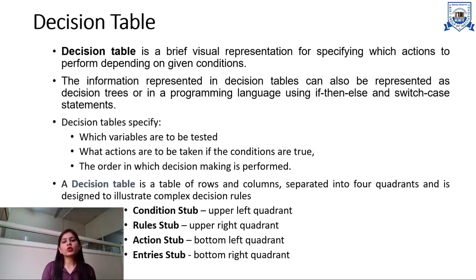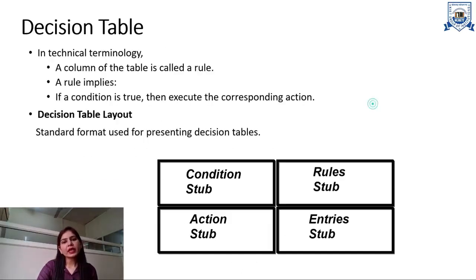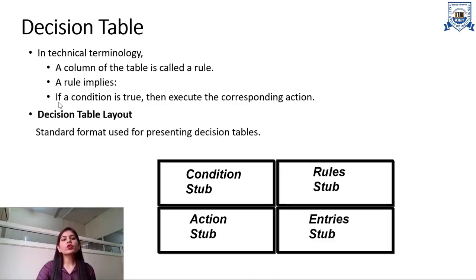A decision table is a table of rows and columns separated into four quadrants: the condition stub, the rule stub, the action stub, and the entry stub. This is the general format of the decision table. It generally contains columns called rules, and rules are certain conditions which, when satisfied, a certain action is performed.